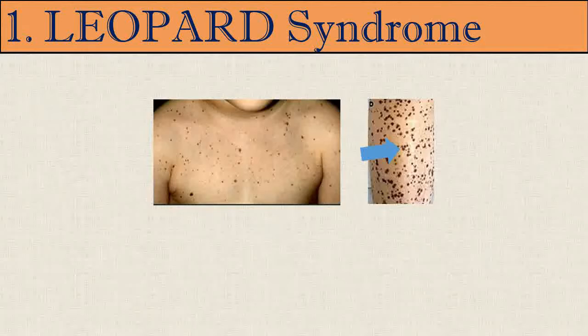The acronym LEOPARD stands for: Lentigines (dark patches on the skin), Electrocardiographic conduction defects, Ocular hypertelorism (wide space between the eyes), Pulmonary stenosis, Abnormal genitalia, Retarded growth leading to stunting, and Deafness. The characteristic freckling of the skin caused by the lentigines is reminiscent of the large cat.